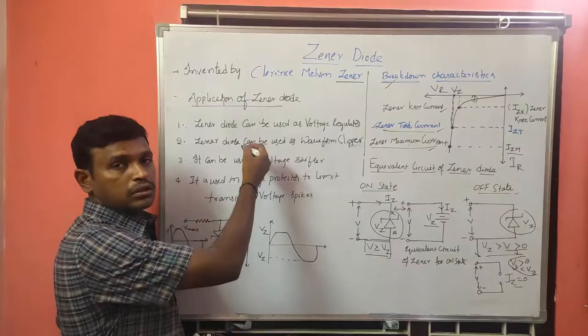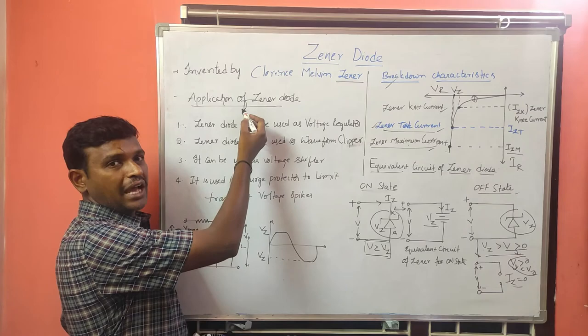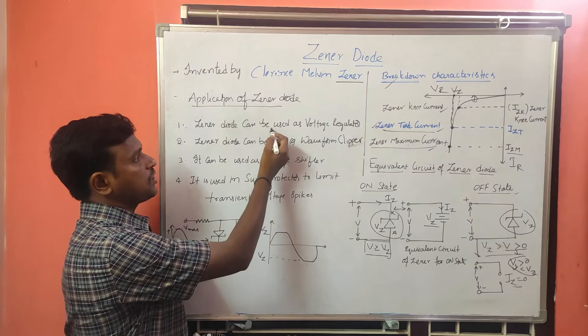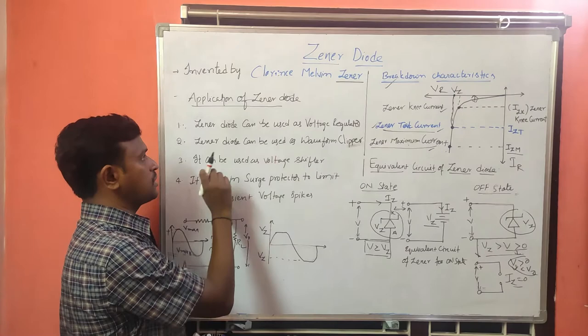GINA diode has different applications. The very important application is that the GINA diode can be used as a voltage regulator. Another application is that the GINA diode can be used as a waveform clipper.